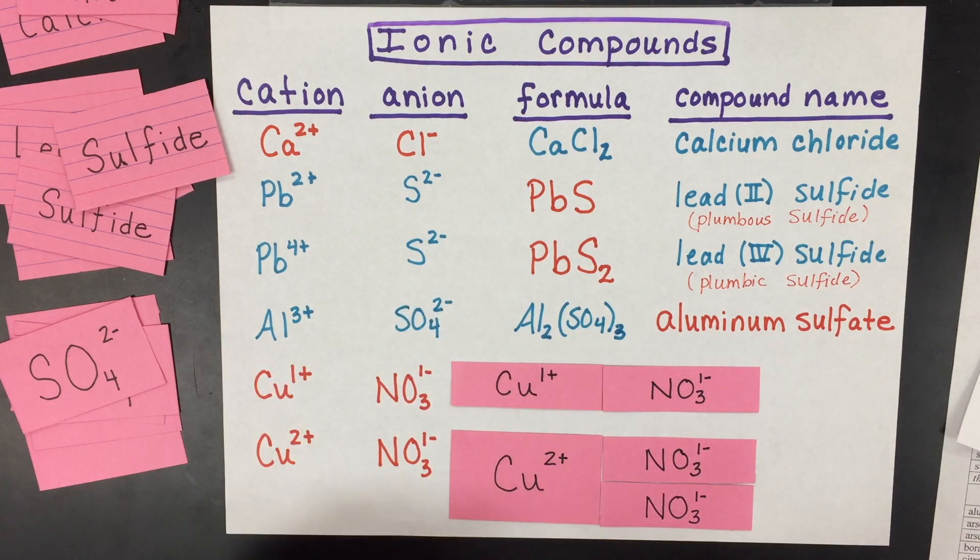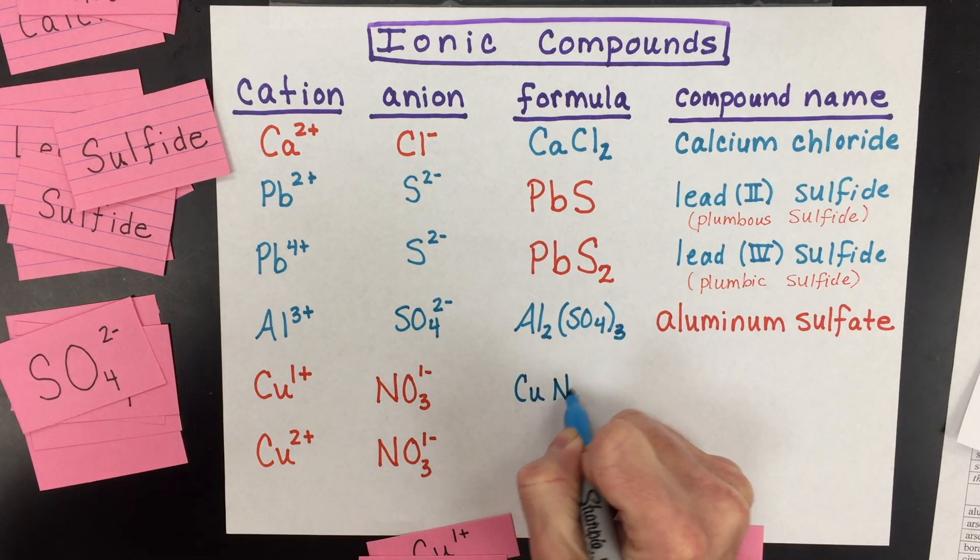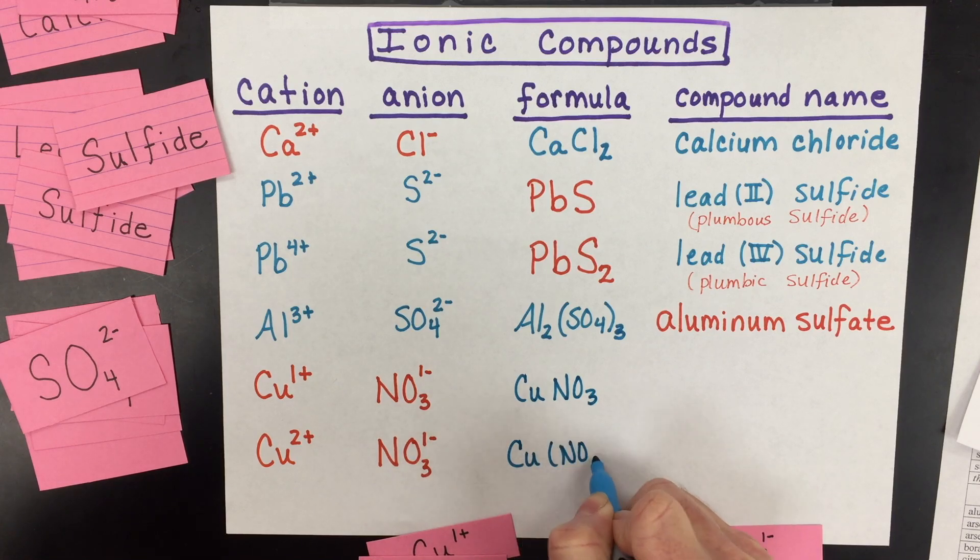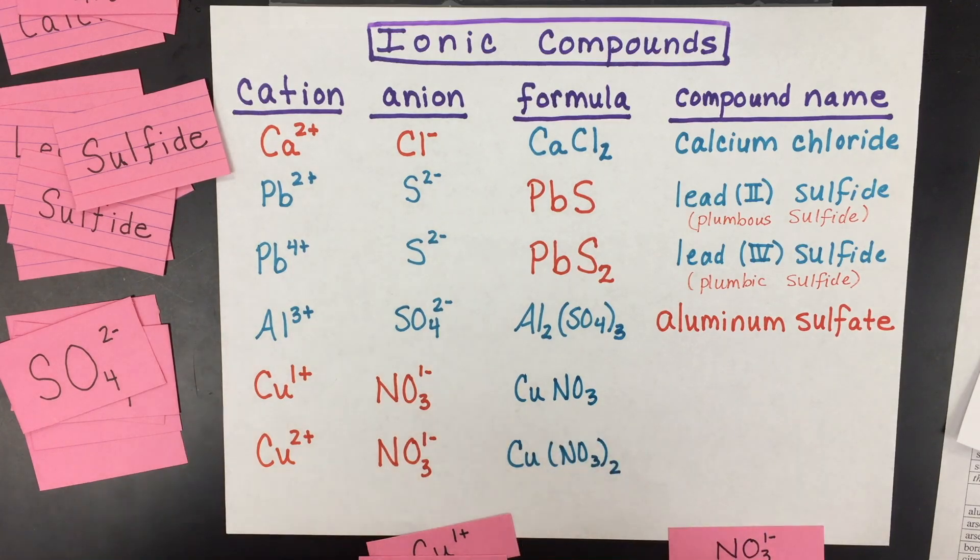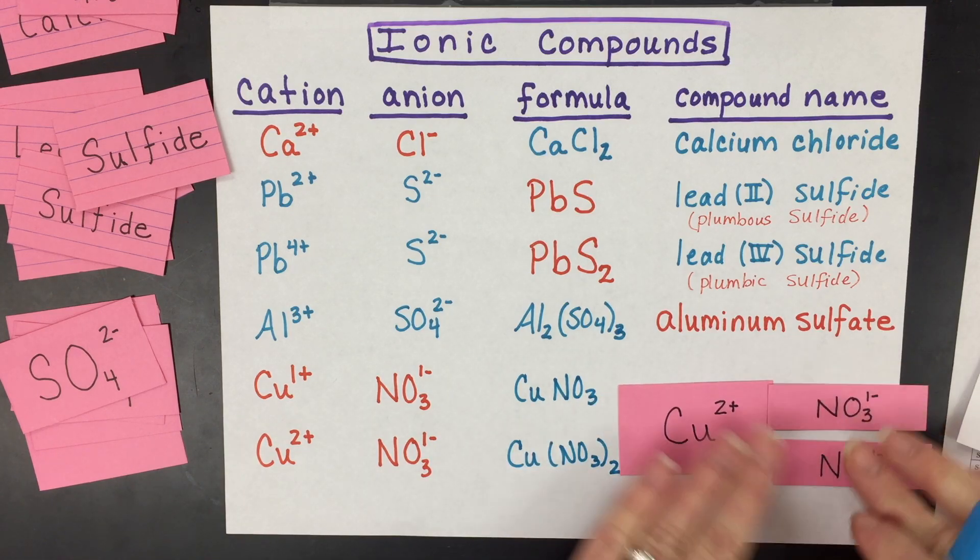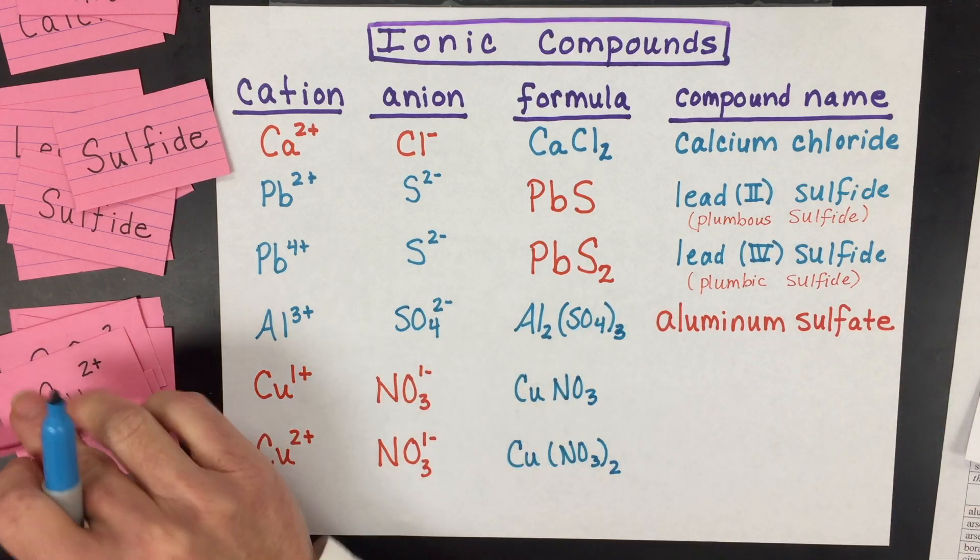So I'm going to write down the formulas for these. CuNO3 for the first one, but then Cu parentheses NO3 and then a 2 to denote that second one. Remember that that one needed two nitrates to have a net charge of zero, and because it's a polyatomic ion, we need to have the parentheses.